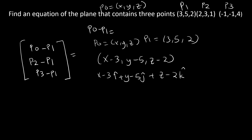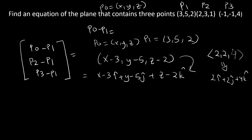Just to clarify the vector notation: for example, if I have a vector 2, 2, 4, this can also be written as 2i-hat plus 2j-hat plus 4k-hat. So that is what was done here for the P0 minus P1 row.